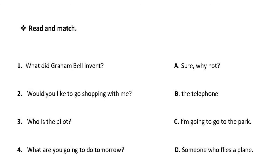Another exercise — read and match. Number one: What did Graham Bell invent? Number two: Would you like to go shopping with me? Number three: Who is the pilot? Number four: What are you going to do tomorrow? The choices are: A — Sure, why not? B — The telephone. C — I'm going to go to the park. D — Someone who flies a plane.